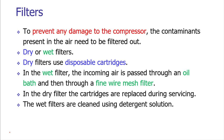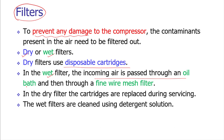The first element is filters. Filters are used to prevent damage to the compressor. We have dry and wet filters. Dry filters use disposable cartridges containing a chemical that removes water vapors from the compressed air. In wet filters, the incoming air is passed through an oil bath and then through a fine wire mesh to dry the air. After use, dry filter cartridges must be replaced, while wet filters are cleaned regularly using a detergent solution so they can be reused multiple times.